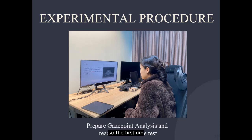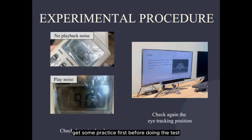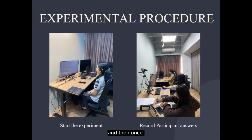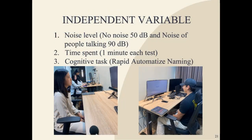The first step is to prepare the GazePoint analysis and read the rules of the test. The second step is to get some practice before doing the test. Then prepare the noise level and check the eye tracking position. Once the noise is prepared and GazePoint is checked, we start the experiment and record the participants' answers.